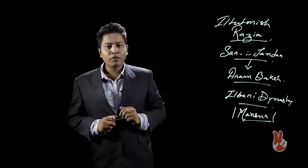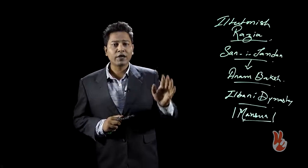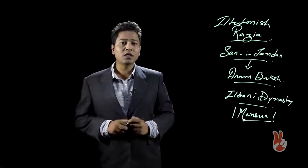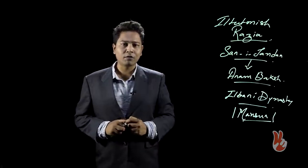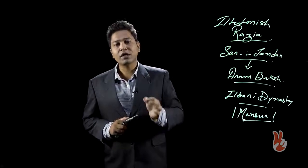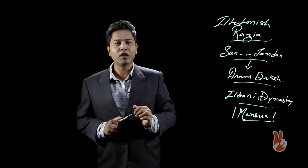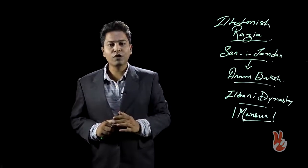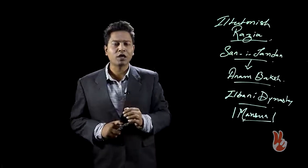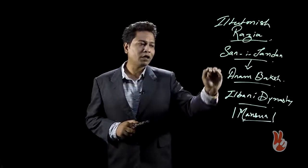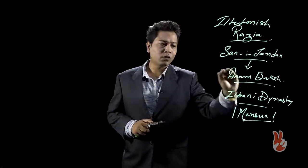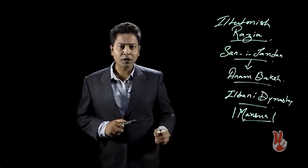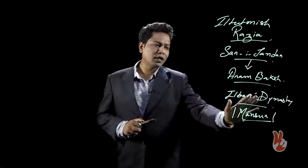We should also know about Iltutmish something which is very important is that Iltutmish was a slave of Qutubuddin Aibag. And he was not just a slave but he was also the son-in-law of Qutubuddin Aibag. Besides being the Sar-e-Jandar, he was also a slave and son-in-law of Qutubuddin Aibag and he comes into power after defeating the rightful heir to the throne that is Aram Baksh, and he brings into effect the Ilbari dynasty.